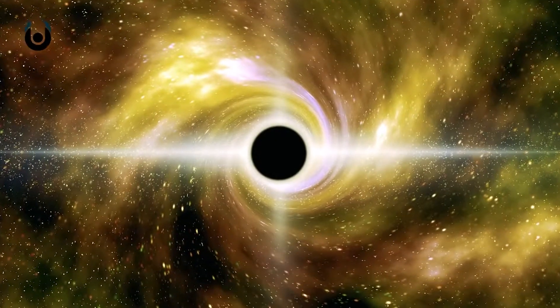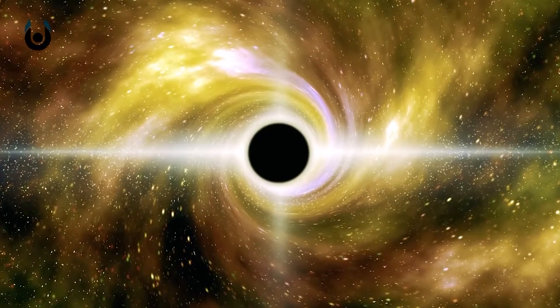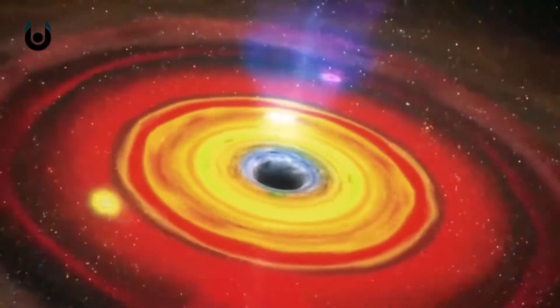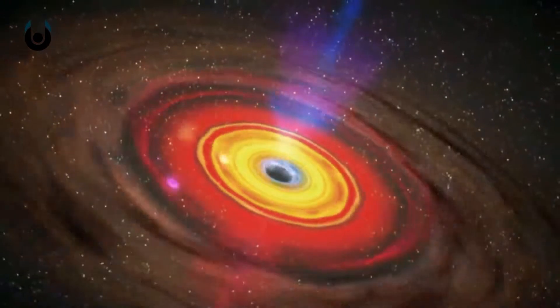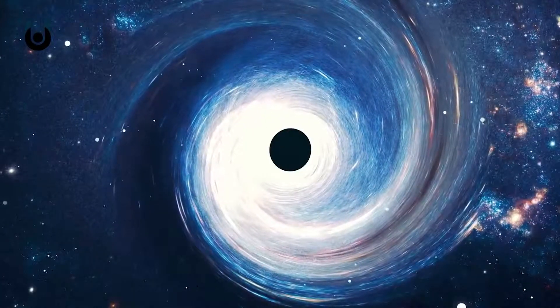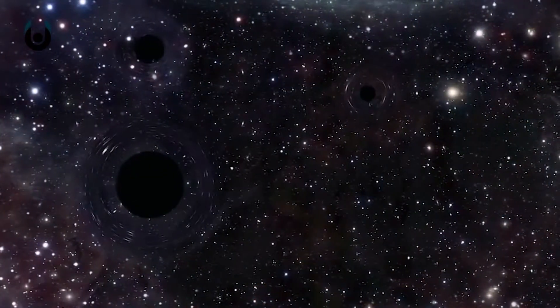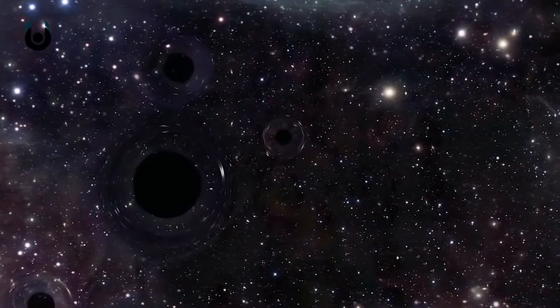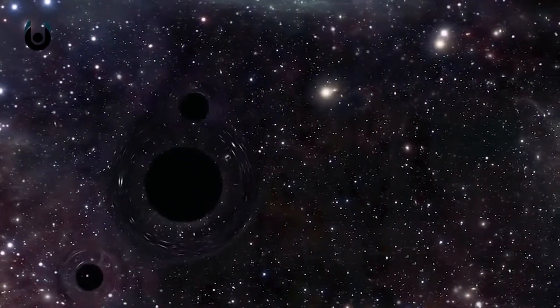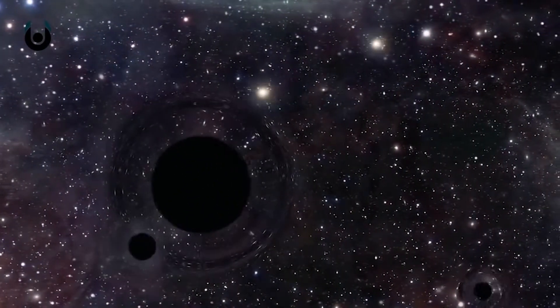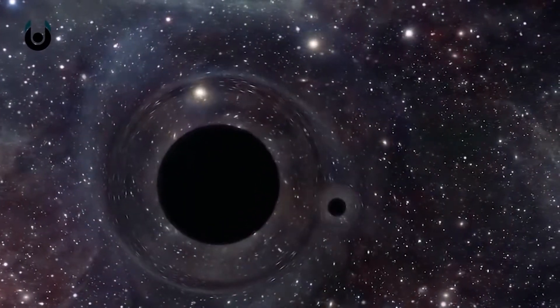The second reason that black holes are bad at being astronomical vacuum cleaners is that they're really, really inefficient at getting material close enough to them to cross the event horizon and add to the mass of the black hole. Even small black holes, which exist in great numbers in the galaxy, are much better at tearing a companion star apart than they are at actually growing their own size by consuming the star whole.